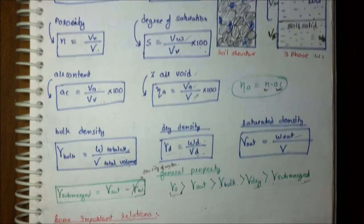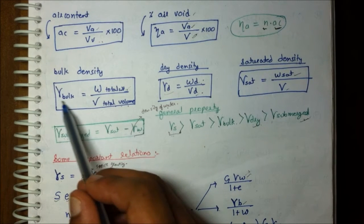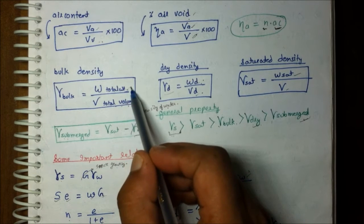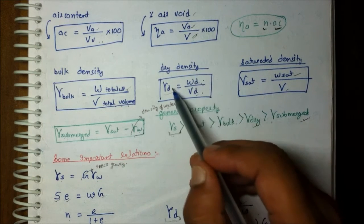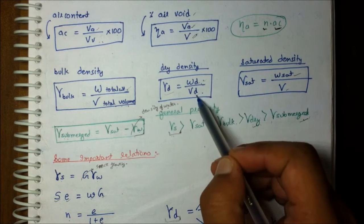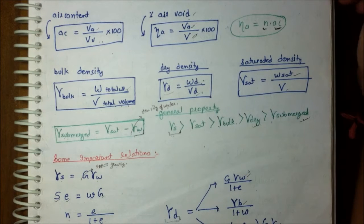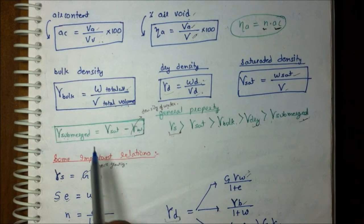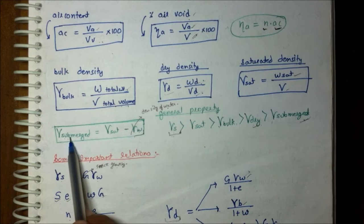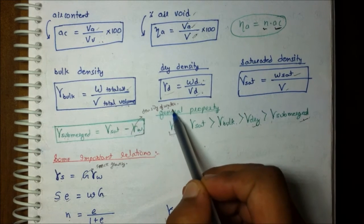Next is bulk density, gamma bulk, which equals the total weight of soil upon total volume of soil. Then we have dry density: gamma D equals weight of dry soil upon volume of dry soil. Saturated density means the soil is completely filled with water, so gamma saturated equals W_saturated upon total volume. Also, gamma submerged equals gamma saturated minus gamma W, where gamma W is the density of water.